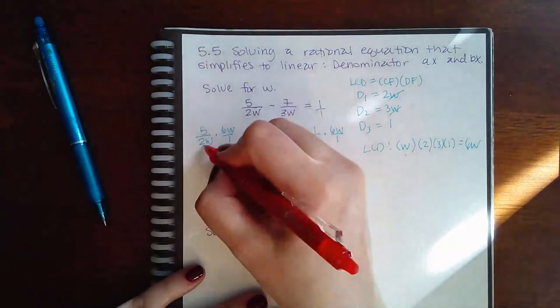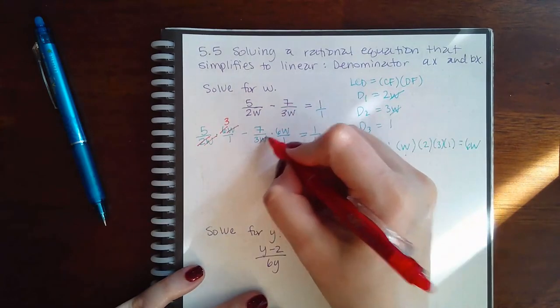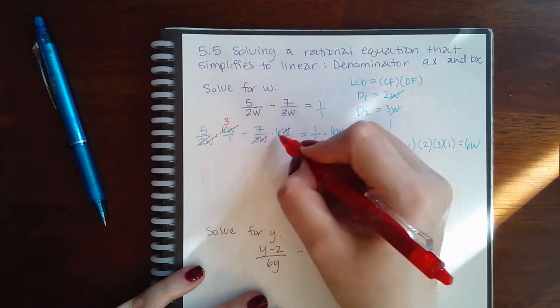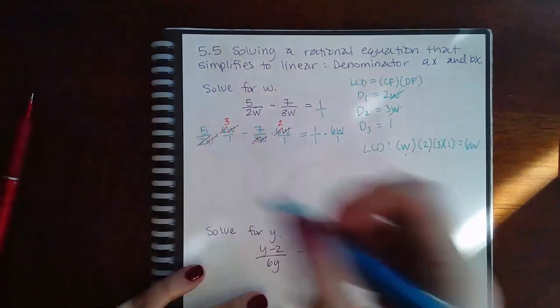So then here the W's will cancel, and 2 will go into 6 three times. Here the W's will cancel, 3 will go into 6 two times, and here nothing will cancel, so we leave that one alone.